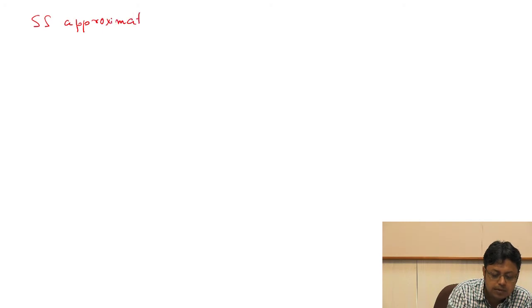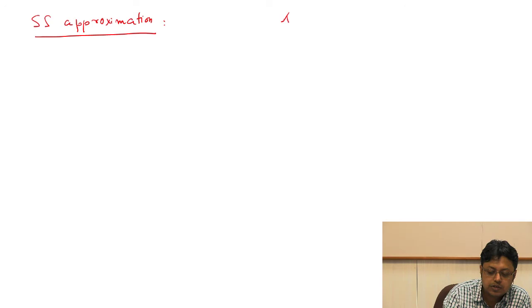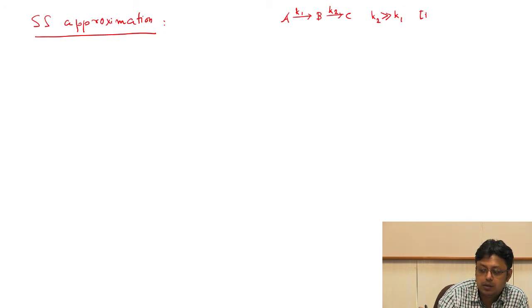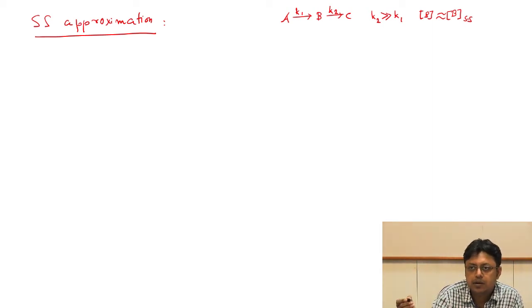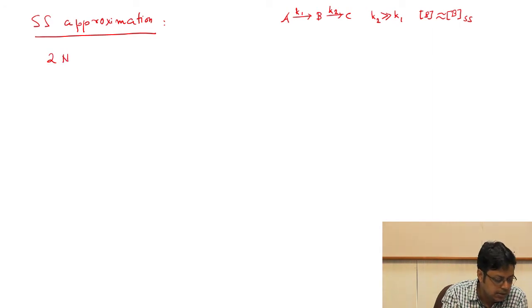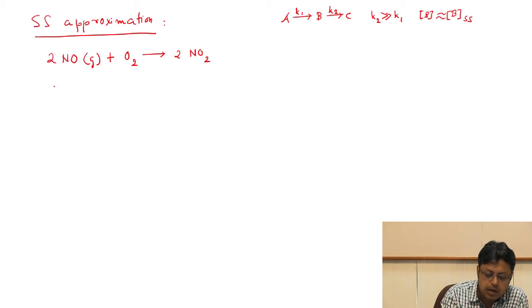We already discussed in the previous lecture what the steady state concentration of an intermediate is. For a consecutive reaction A → B → C with rate constants K₁ and K₂, under the condition K₂ >> K₁, the concentration of B reaches a steady state — remaining essentially constant over time after an initial induction period. We will now consider a slightly different version to explain the same reaction: 2NO(g) + O₂ → 2NO₂.